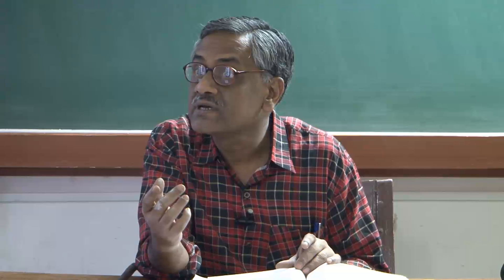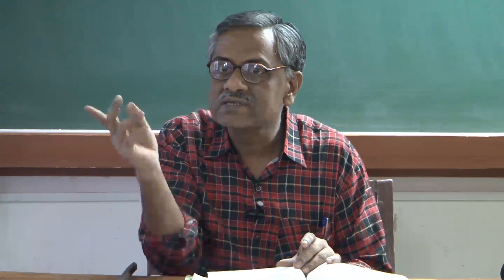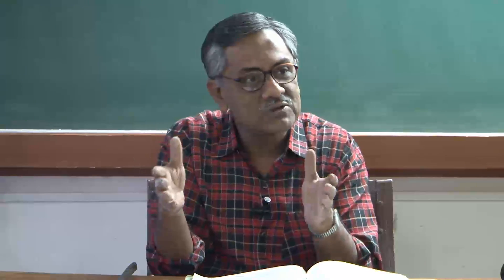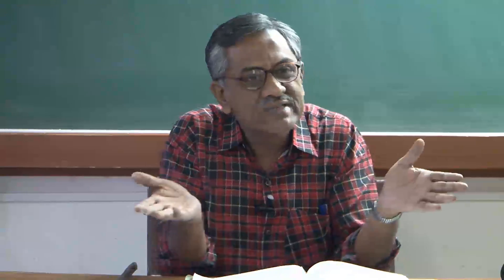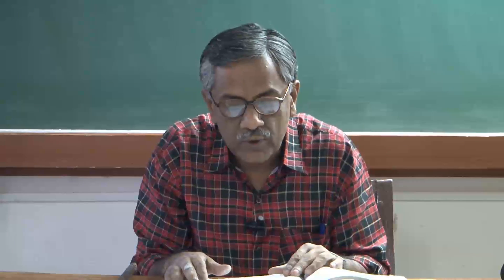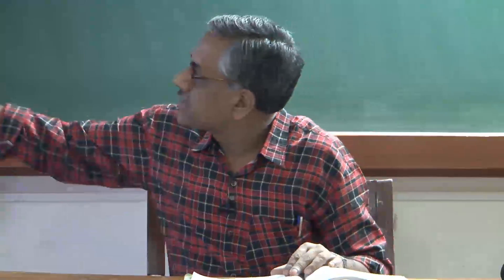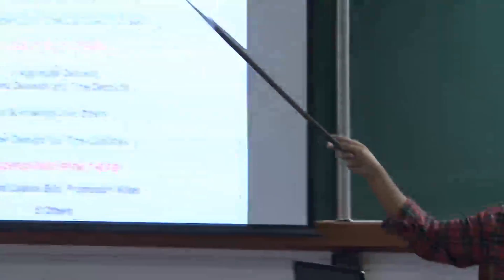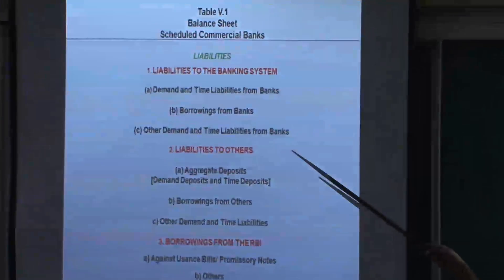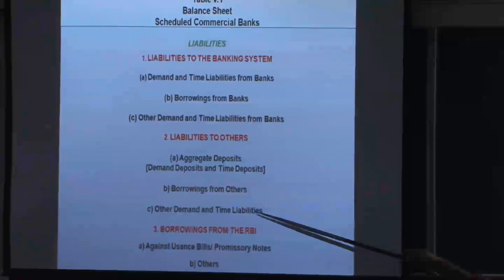Another example is housing loans. The National Housing Bank does not have counters where you could go and get a loan for your house. National Housing Bank loans are channelled through commercial banks, creating another kind of borrowing liability for commercial banks. Then there are various development funds that come from the RBI — like export promotion funds — borrowed not for regular banking activity but for development purposes.